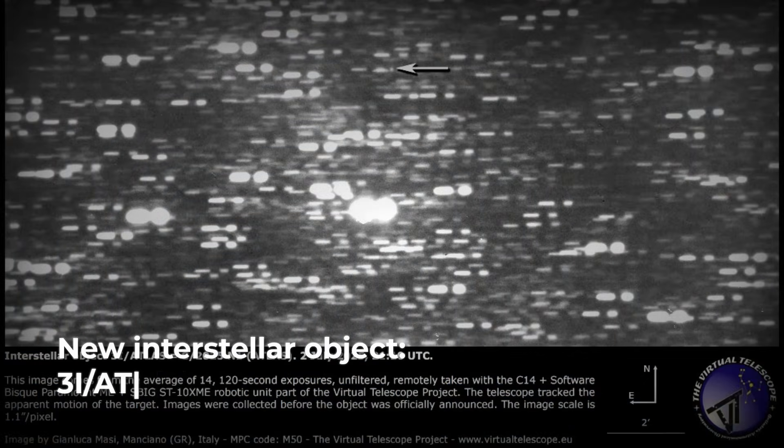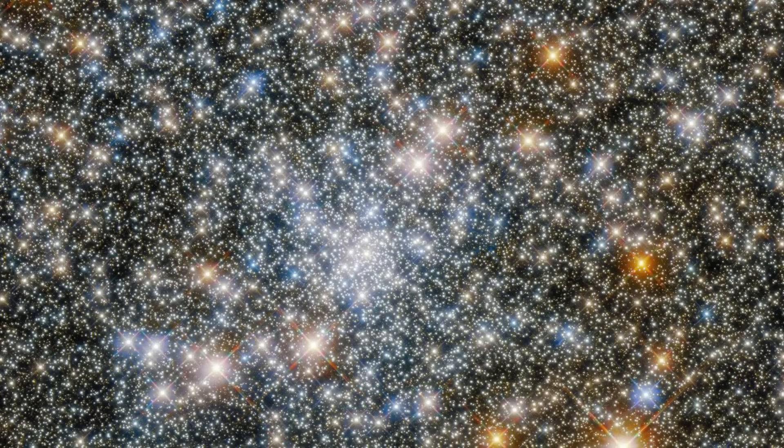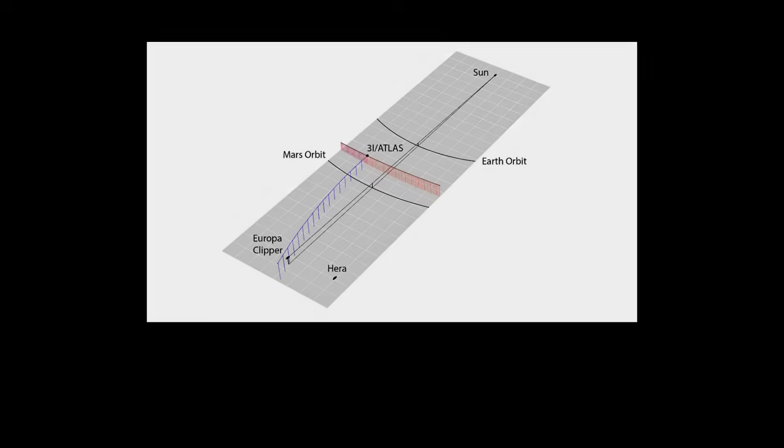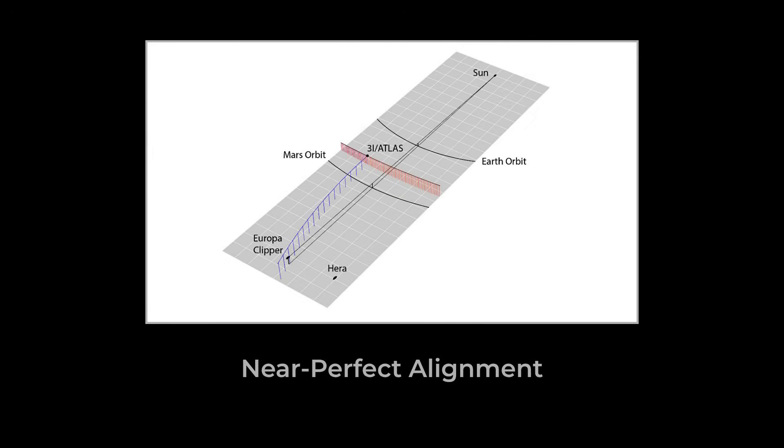This new object, tentatively labeled 3i-Atlas, was in a league of its own. Media outlets seized on the discovery almost instantly. Headlines called it a cosmic skyscraper, a rogue city barreling through the solar system. The phrase Manhattan-sized echoed across newsrooms and social media feeds. Astronomers fielded a barrage of questions: Was it dangerous? Was it natural? Why was it moving so precisely along the planetary plane?